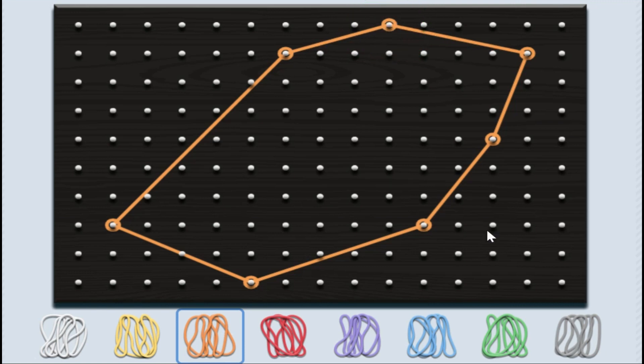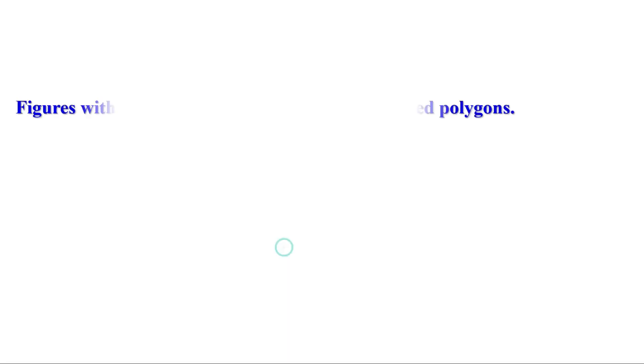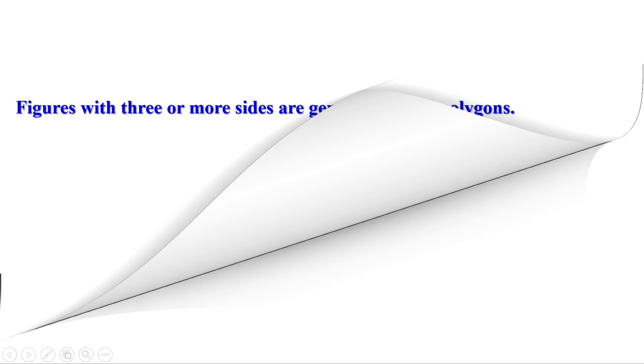I have joined seven dots and I got a septagon. There are seven sides, seven angles and seven vertices. All these figures are generally called polygons. Figures with three or more sides are generally called polygons.